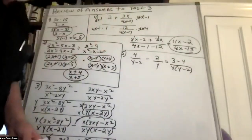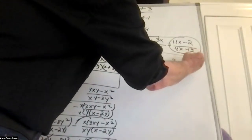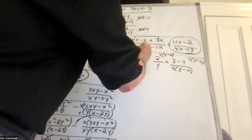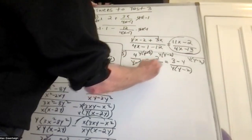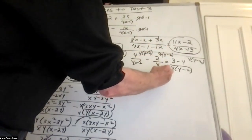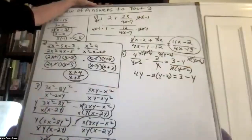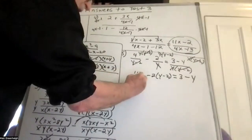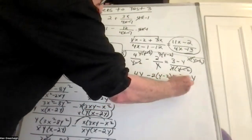In this type of problem, we want to get rid of the denominators. Therefore we multiply by the least common multiple, which is y times y minus 2. Each term gets multiplied by y times y minus 2. This drops out with that — you get 4y. This drops out with that — you get negative 2 times y minus 2. Both of these drop out and you get 3 minus y.